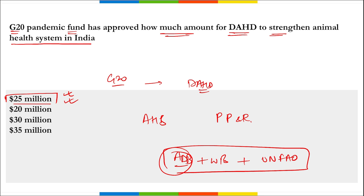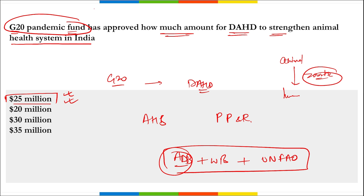This fund will also provide dedicated resources for pandemic preparedness and response (PPR), increase investment, and enhance coordination among various partners. The fund will bring additional resources to India to reduce the risk of pathogens emerging from animals — what is known as zoonotic disease. The G20 Pandemic Fund was established in September 2022 and formally launched under Indonesia's G20 presidency in Bali. The fund, hosted by the World Bank, has already raised $2 billion in seed capital.